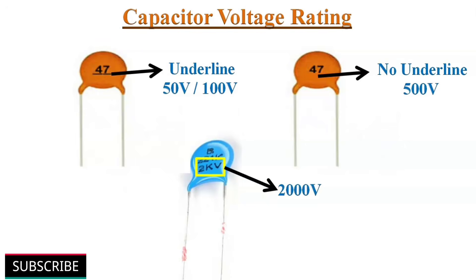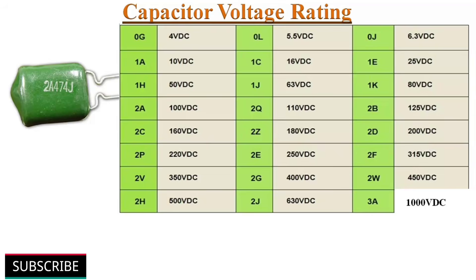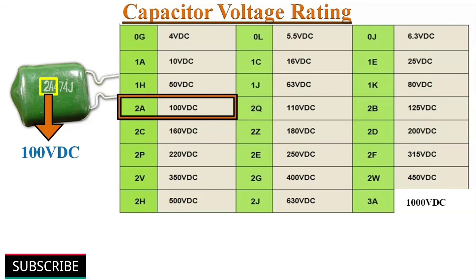2KV indicates a voltage rating of 2000 volts, and 1KV indicates 1000 volts. If a capacitor is marked with 2A474J, the first two characters 2A indicate the voltage rating and can be decoded from the EIA standard voltage rating table. For example, 2A is a 100V DC rating. If 2C is printed, then its voltage rating is 160 volts DC.